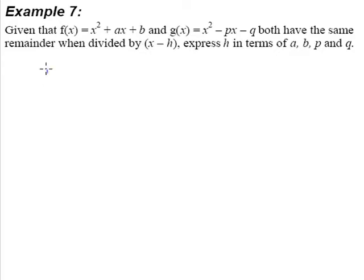To find the remainder when f(x) is divided by x minus h, we have to substitute in x equals h. So when you substitute in x equals h, this is what we end up with: h² + ah + b. So this is the remainder.